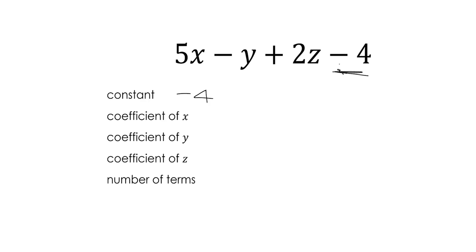Then the coefficient of x, that's the number that x is multiplied by. So let's have a look here. 5x. So the number x is multiplied by is 5. Have a look here. What's the coefficient of y? What number is y multiplied by? Remember, if we don't have a number there, there basically is a 1 there. We don't write that in.